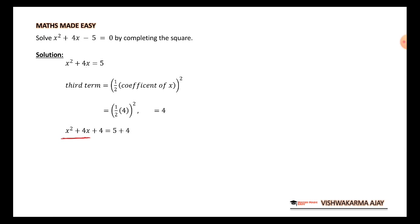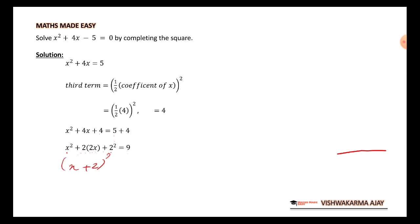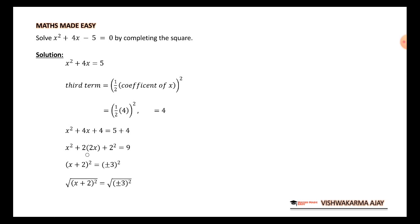We add 4 to both sides: x² + 4x + 4 = 5 + 4. Now, 4x can be written as 2 × 2 × x, and 4 as 2². So 5 + 4 = 9. This is the formula a² + 2ab + b². So we can write (x + 2)² = 9, or (x + 2)² = (±3)², since both (−3)² and (+3)² equal 9.